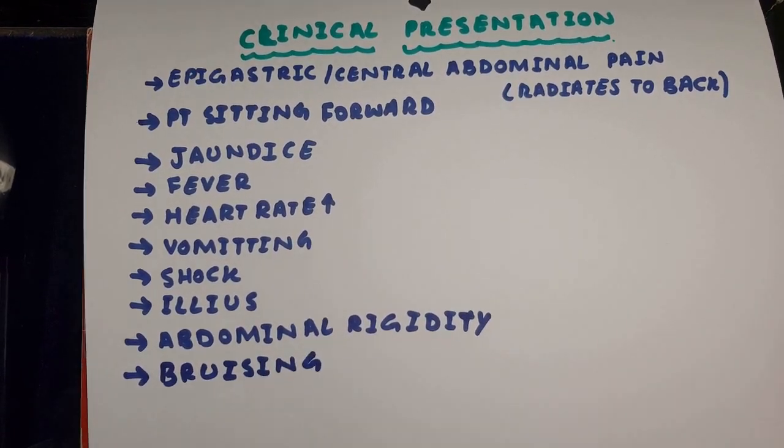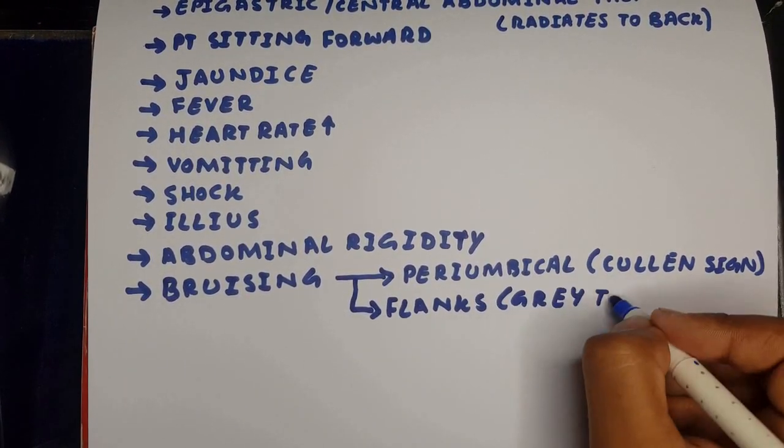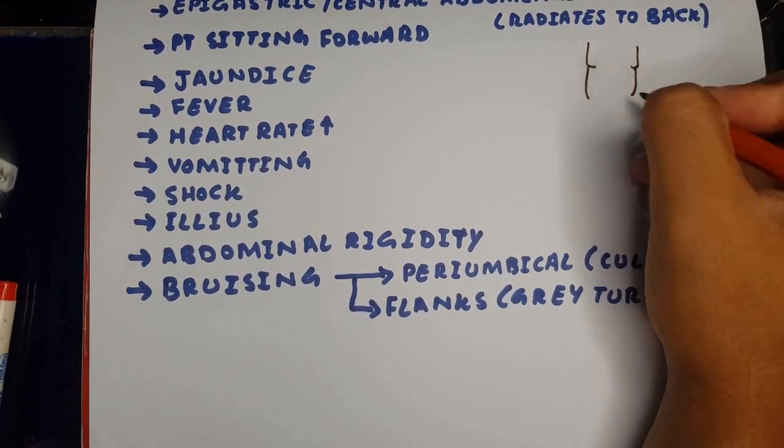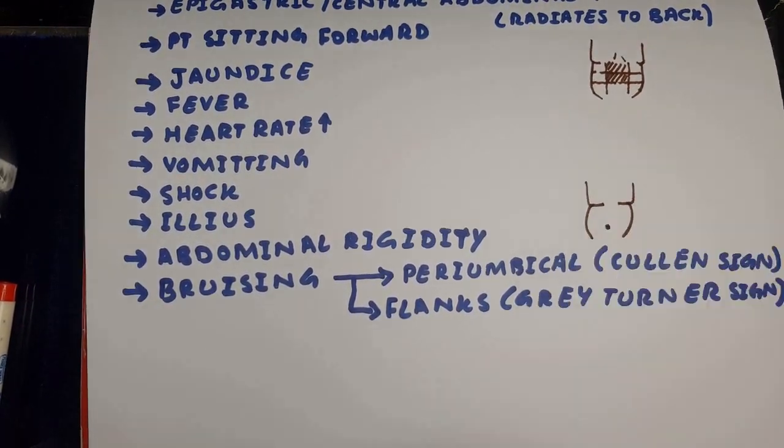The patient may have bruising around the periumbilical region, known as the Cullen sign, or on the flanks, like when you turn the patient to see the grey bruising, it's Grey Turner sign on the flanks.